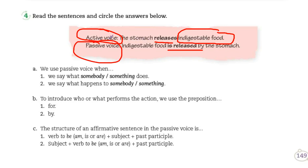¿Cuál es cuál? Es fácil. La voz activa es cuando tú o algo hace algo. Por ejemplo: yo como frutas y verduras; mi estómago digiere la comida y desecha lo que no le sirve; el perro salta. Eso es active voice, porque hay acción — algo o alguien está haciendo algo.